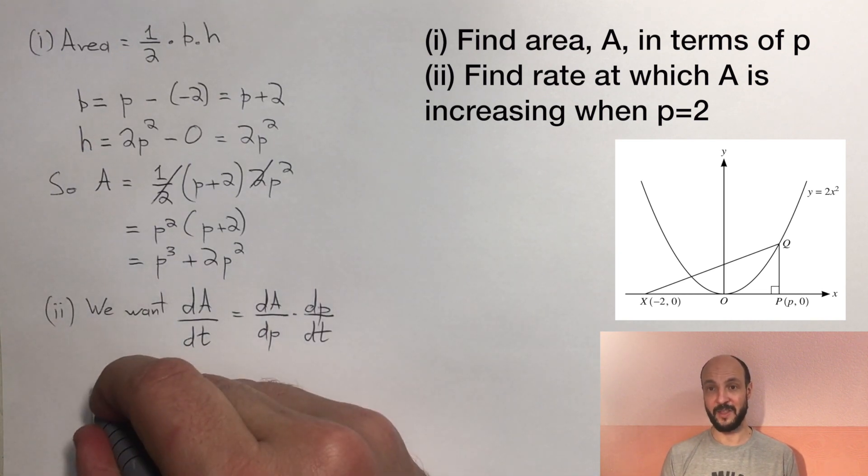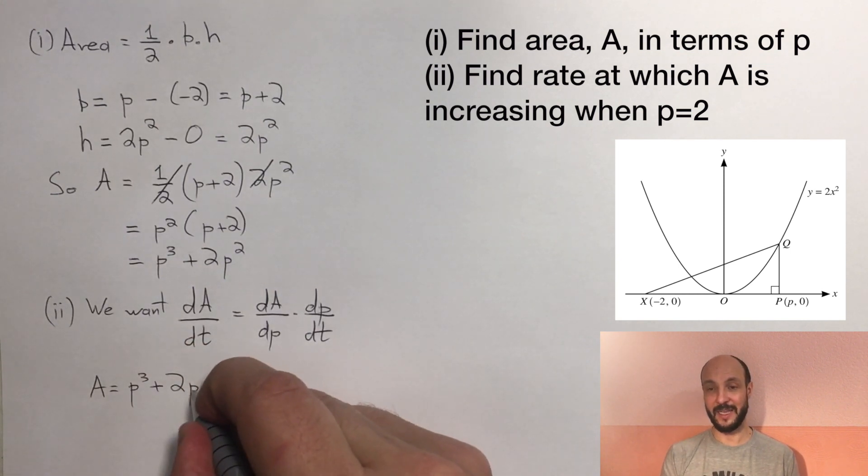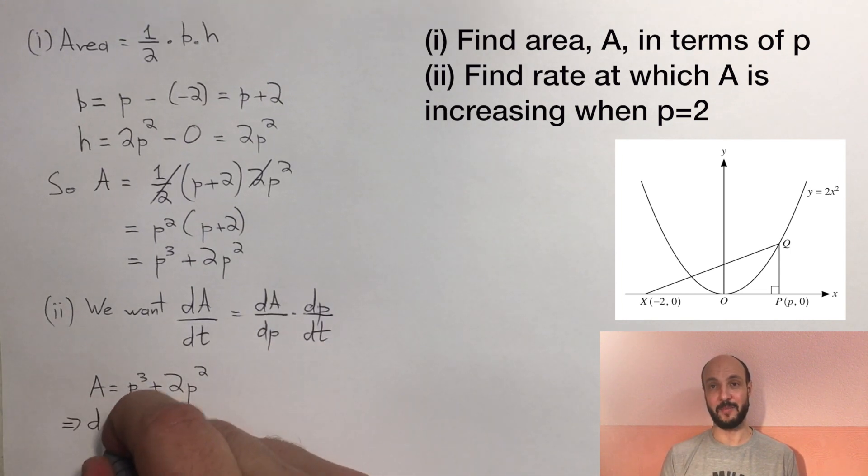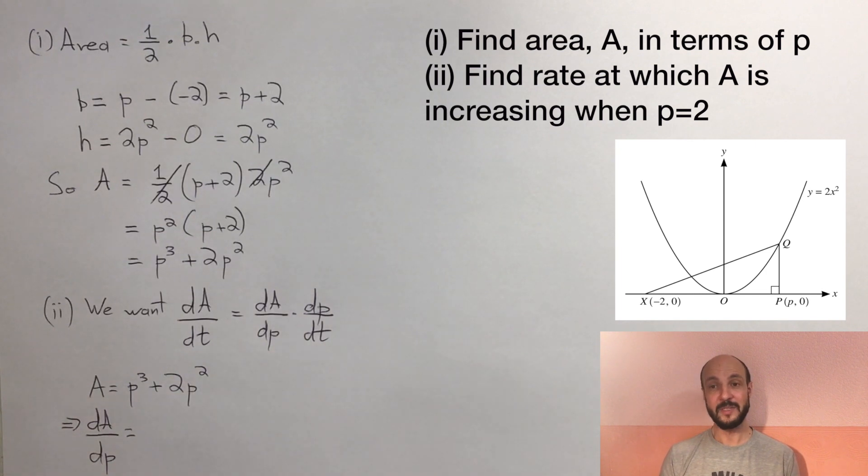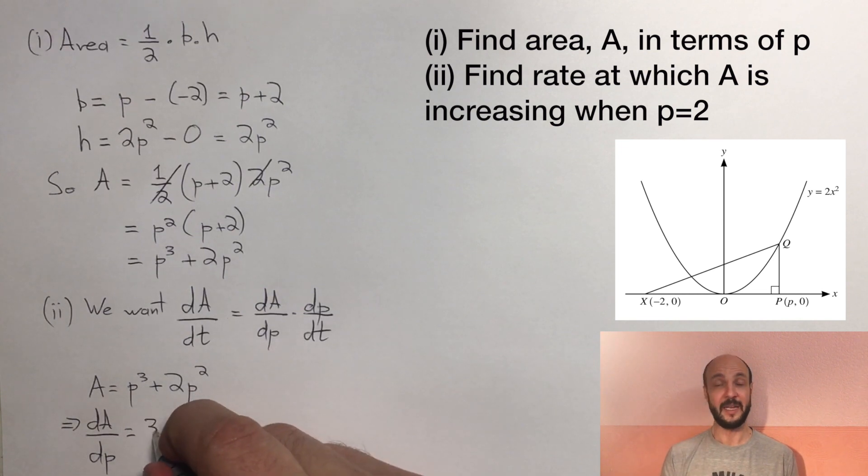Well, we've already said above that the area is p cubed plus 2p squared. So as we increase p, the change in area as p changes, which we can write as dA over dp, we simply need to differentiate this.